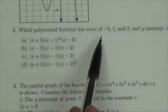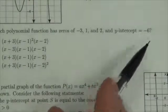Which polynomial function has zeros of negative 3, 1, and 2, and a y-intercept of negative 6?